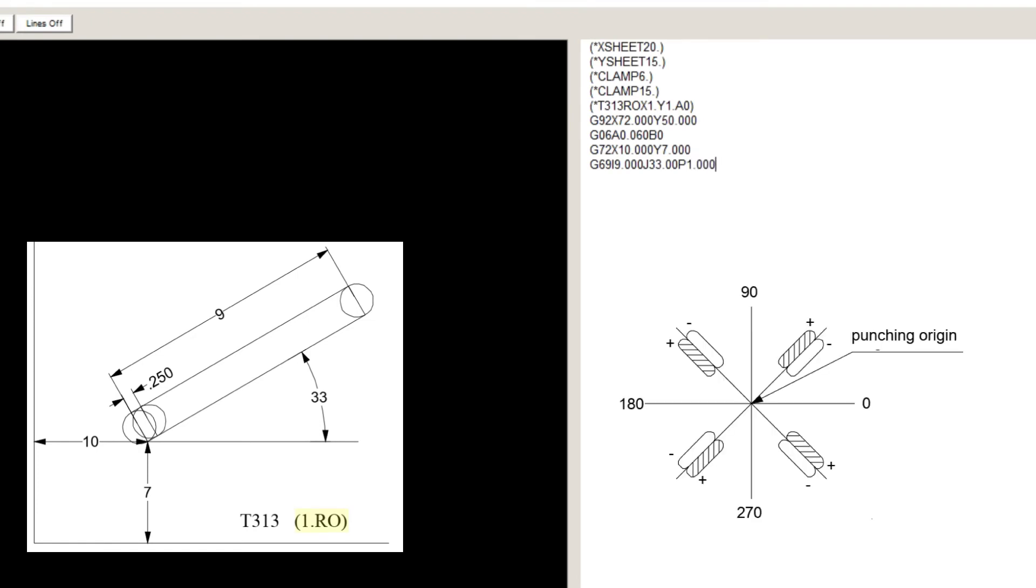Depending on the sign of P, we can offset to the right or to the left of the line. If we look at the direction of the line, a right offset will be negative and a left offset will be positive. A zero value will punch on the line without any offset. In this case, we want the punch to the left so the P will be positive.